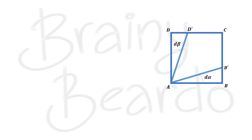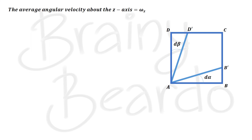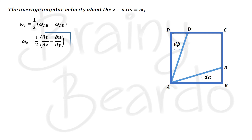As we can see, sides AB and AD rotate such that their axis is perpendicular to the screen — that is, their axis is parallel to the z-axis. Therefore, the angular velocity of fluid element ABCD about the z-axis, called ω_z, is the average of the angular velocities of sides AB and AD. We can write: ω_z = ½(ω_AB + ω_AD) = ½(∂v/∂x − ∂u/∂y). This is the equation for angular velocity about the z-axis.